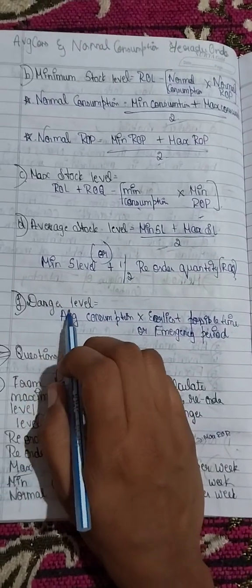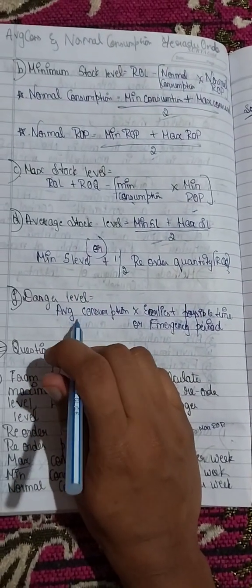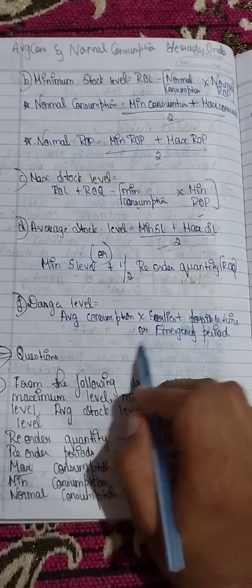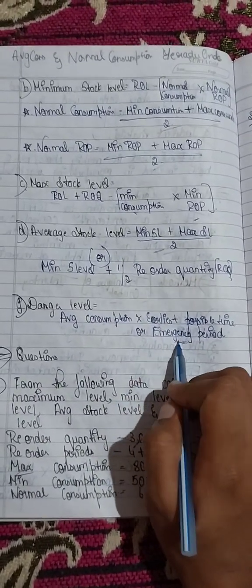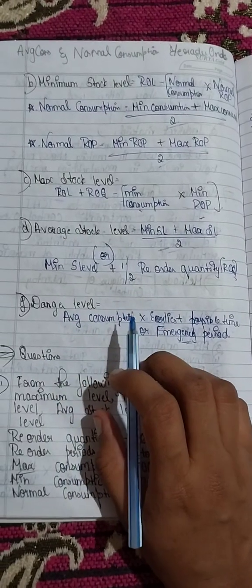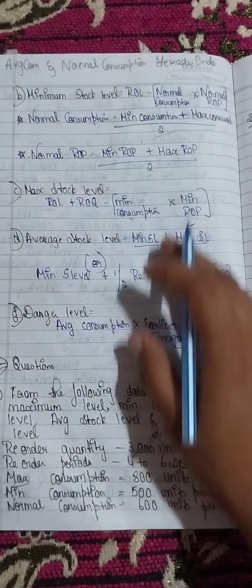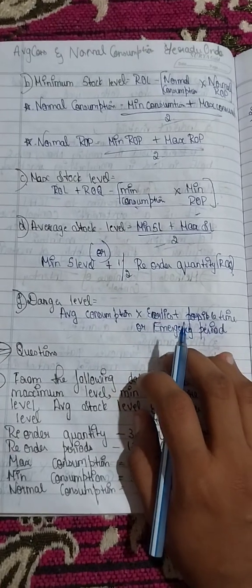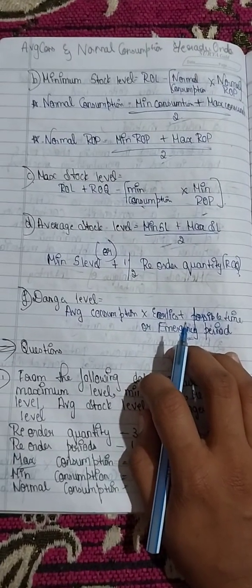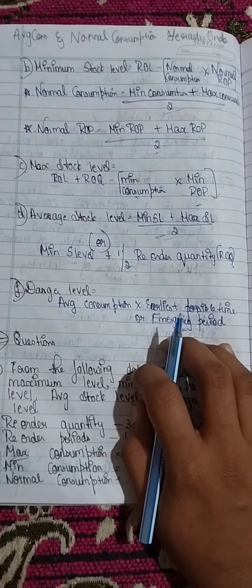The last sub-point is danger level. Danger level is calculated as average consumption multiplied by the earliest possible time or emergency period. Stock level formulas are mandatory to know for 4 marks, and EOQ is also mandatory for one question.